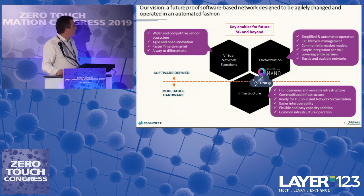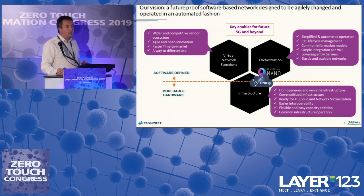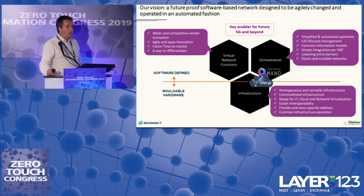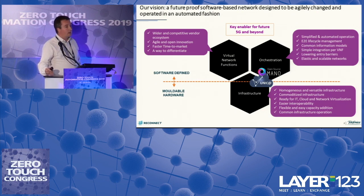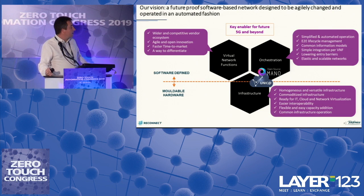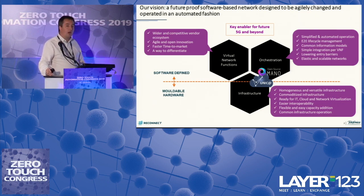Our vision is precisely what you are seeing there — how to have a future network that is totally based in software, totally automated, and that is useful not only for deploying 5G services but for whatever comes after. We are talking about how to design new architectures that are somehow future-proof. The motivation of original network function virtualization was to rely on a very homogeneous and versatile infrastructure. As my colleague Carlos Arias has been discussing, we should have a common infrastructure for IT, for the cloud, and for the network.